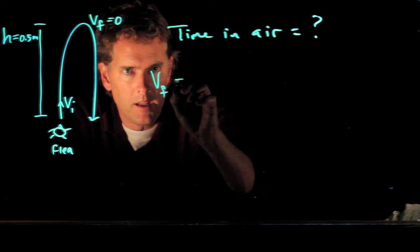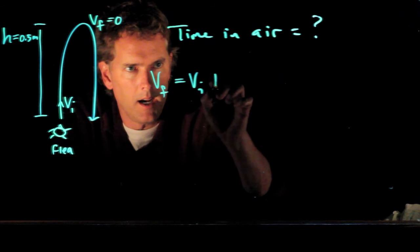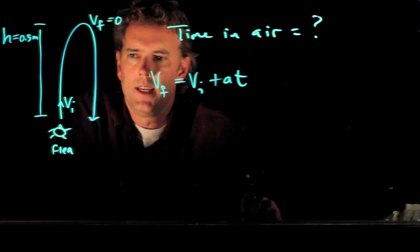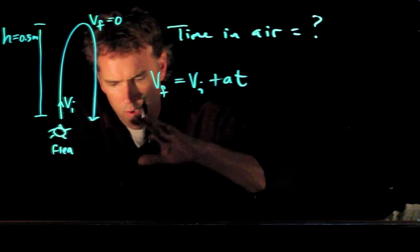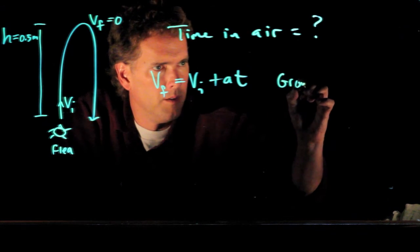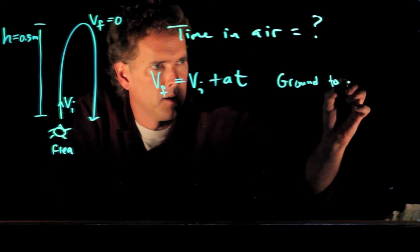VF equals VI plus A times T, where T is how long they are in the air. But let's use the whole motion now. Let's go ground back to ground.